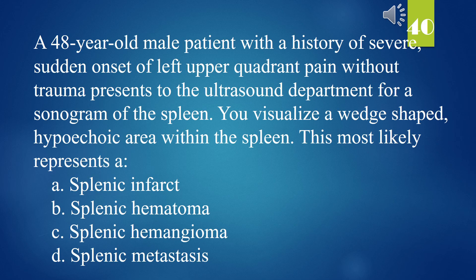A 48-year-old male patient with a history of severe, sudden onset of left upper quadrant pain without trauma presents to the ultrasound department for a sonogram of the spleen. You visualize a wedge-shaped, hypoechoic area within the spleen. This most likely represents: A. Splenic infarct. B. Splenic hematoma. C. Splenic hemangioma. D. Splenic metastasis. The answer is A. Splenic infarct.